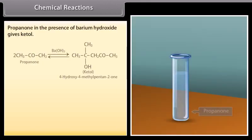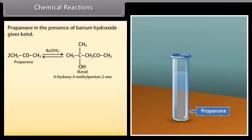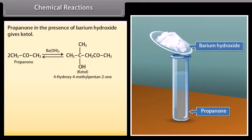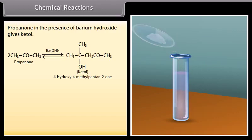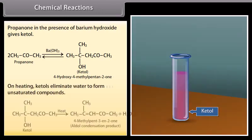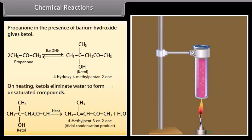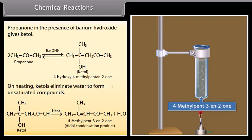Propanone in the presence of barium hydroxide gives a ketol. On heating, ketols eliminate water to form unsaturated compounds.